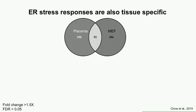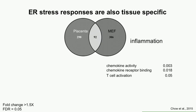On either side of the Venn diagram are about 300 genes unique to each tissue's upregulated response. We previously showed MEFs have a strong enrichment for inflammatory-related genes when ER stress is induced. Strikingly, in the placenta we saw no enrichment of inflammation at all. Instead, we found enrichment of non-coding RNA metabolism in the placenta — something we've never seen when inducing ER stress in other cell types or tissues. That's a very big difference in how these tissues respond to ER stress.